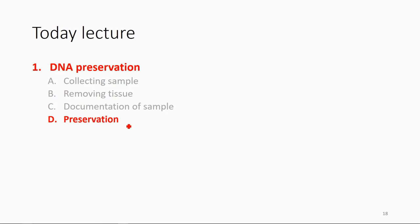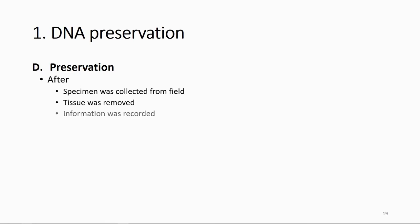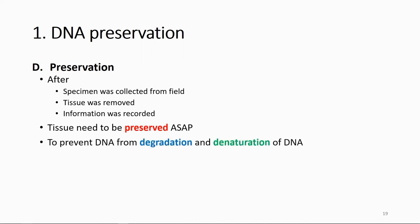After taking a piece of tissue from an animal and labeling it properly, the next step is to preserve the tissue. You have to put the tissue in a chemical or in a fridge as soon as possible to prevent the DNA from degradation and denaturation.